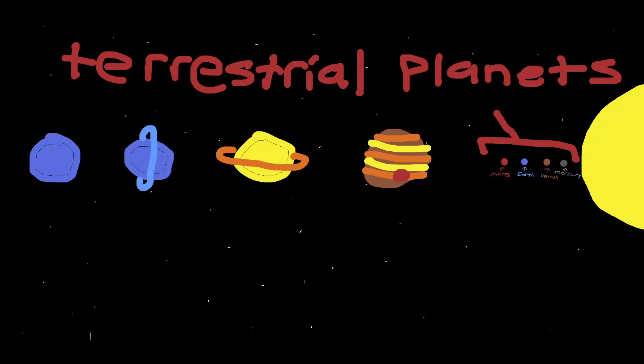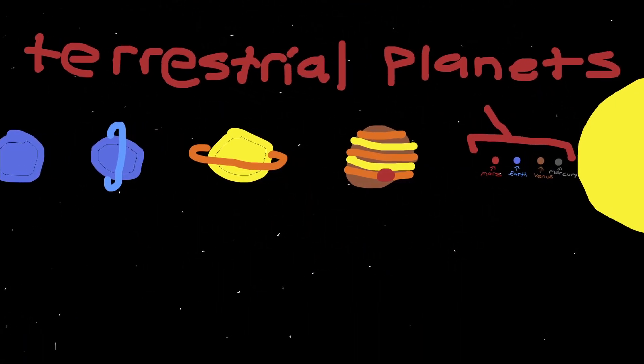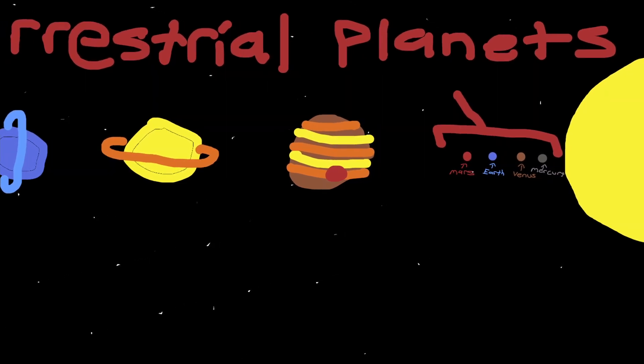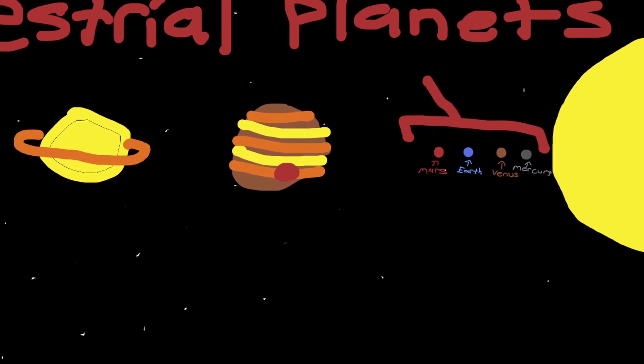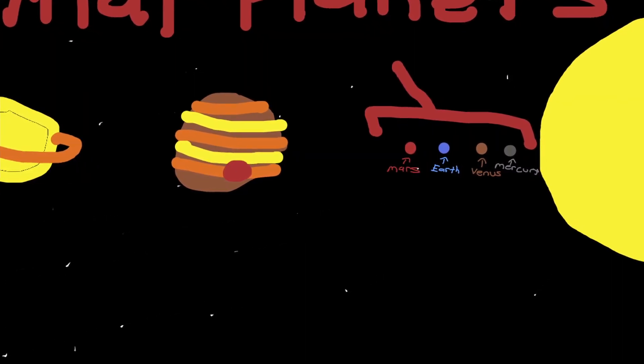This is how the inner planets, called terrestrial planets, were formed. The inner region of the solar nebula was hot due to it being so close to the sun, allowing only rock material to condense into the terrestrial planets.